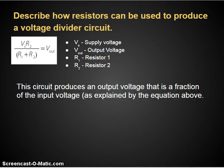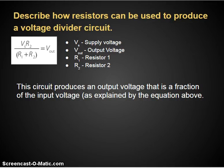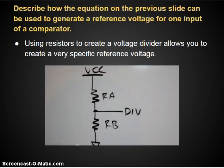Resistors can be used to provide a voltage divider circuit. Using a potentiometer or resistors with the supply voltage, you can create an output voltage that is a fraction of the input voltage, as explained by the equation shown. We're about done with this video, so let's jump to the next video.